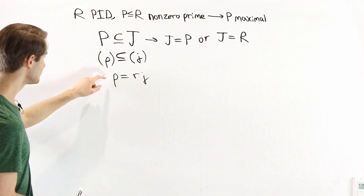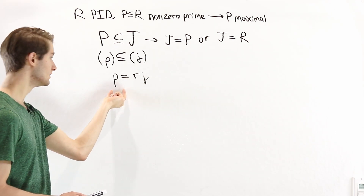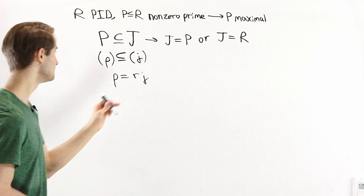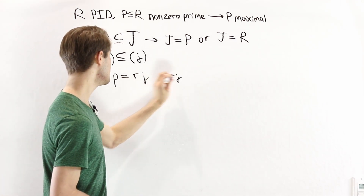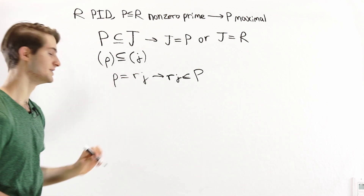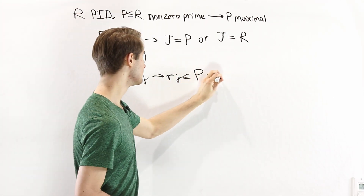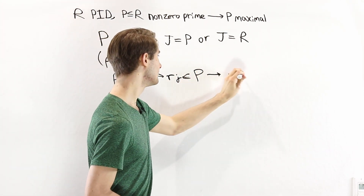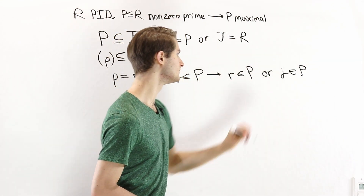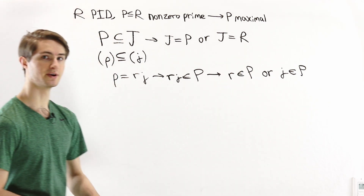This equation is very useful because the element p is in our prime ideal, and therefore rj is an element of our prime ideal P. Because P is prime, that means either r is in P or j is in P. Let's take a look at each of these two cases.